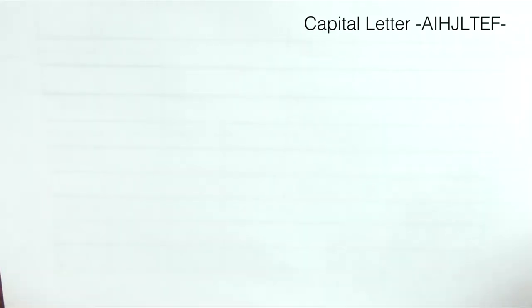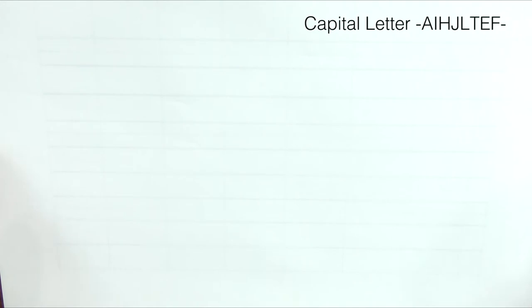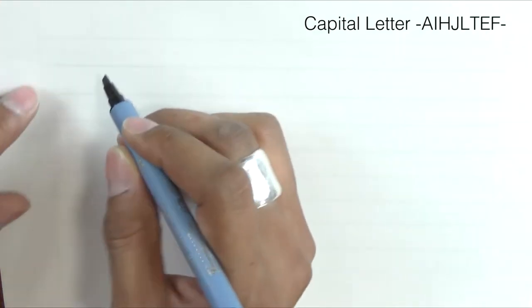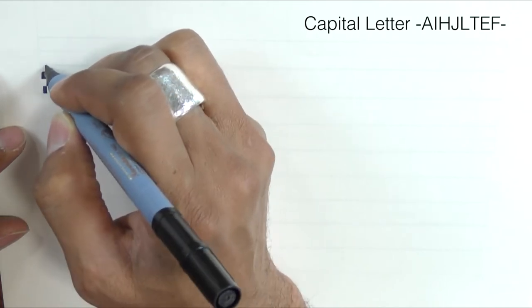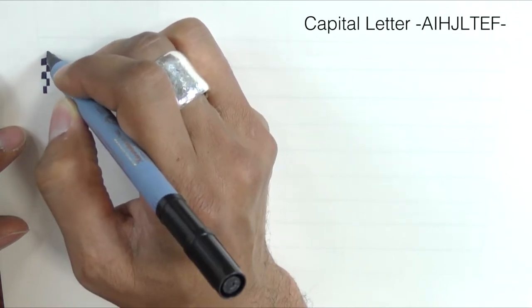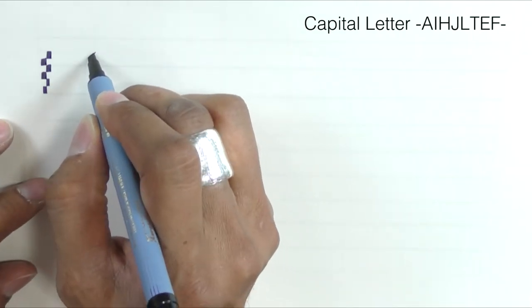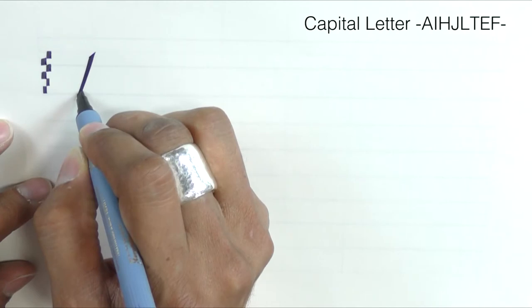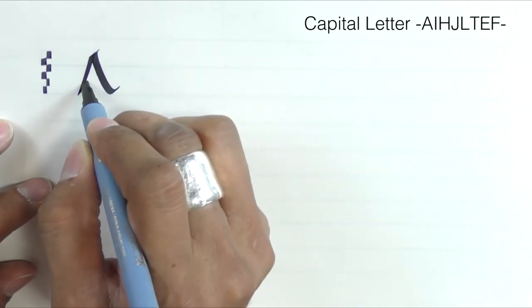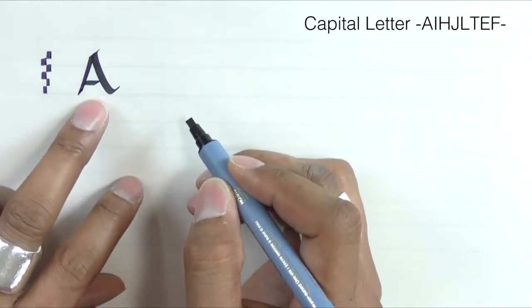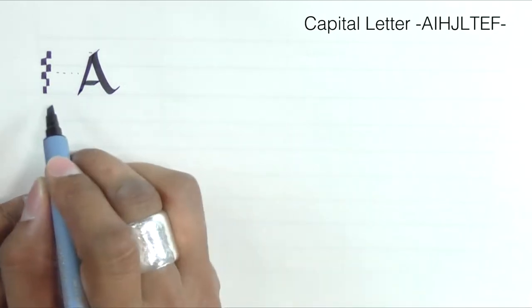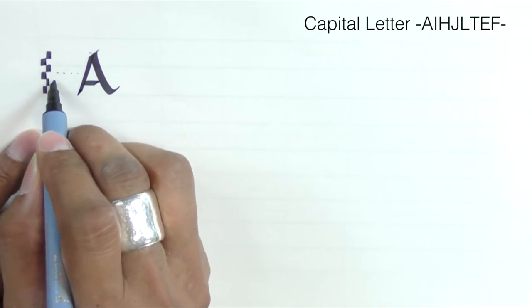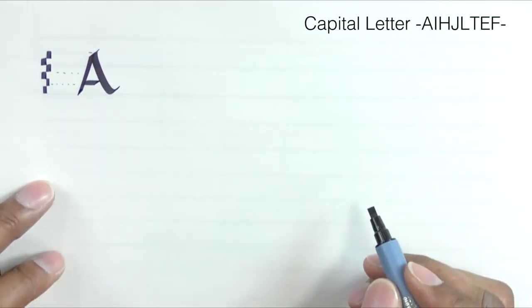We're starting off with the simplest of the letters and going through the letters and their groups. The majuscules are at six nib widths. Notice the crossbar is lower than halfway. This is the halfway line there, so it's halfway between the second square.